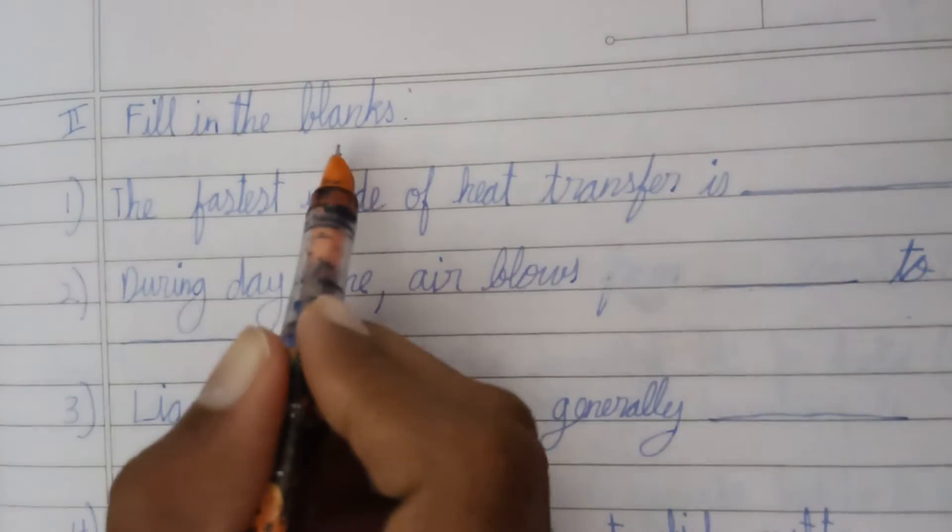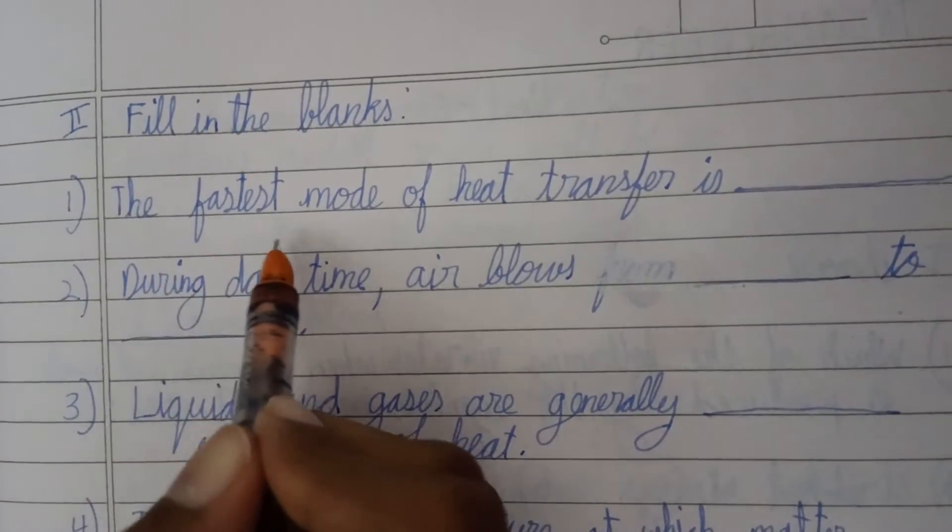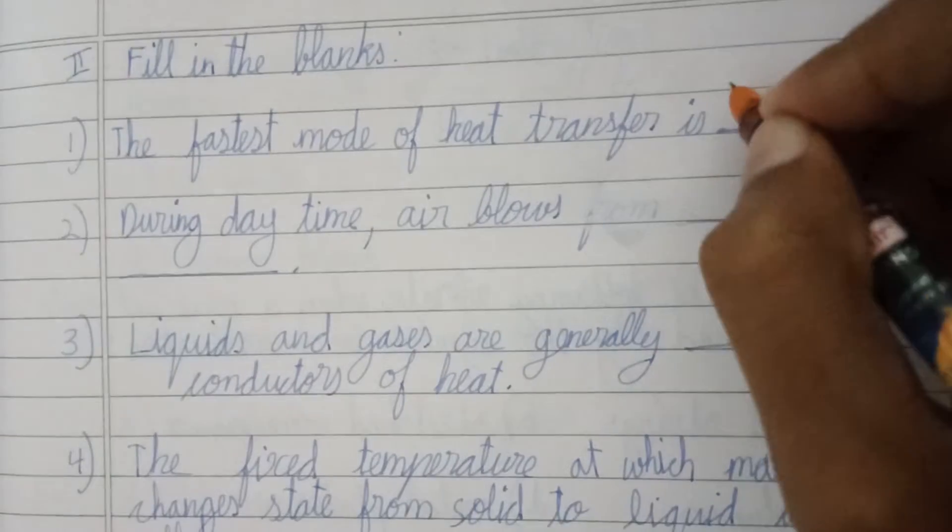For second robot to fill in the blanks for squishing, the fastest mode of heat transfer is radiation.